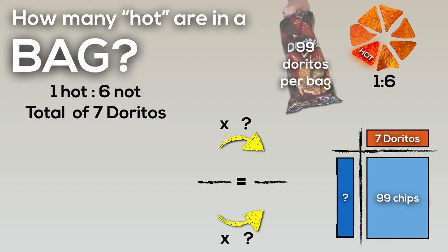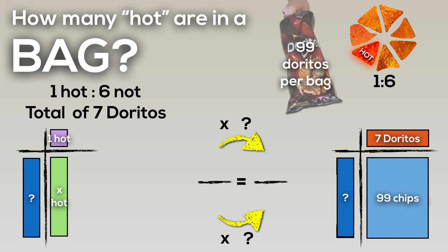And if I want to determine that factor, that missing factor, seven times some number equals 99, I can do the same thing here and determine, well, one hot times that same number should give me the total number of hot chips.